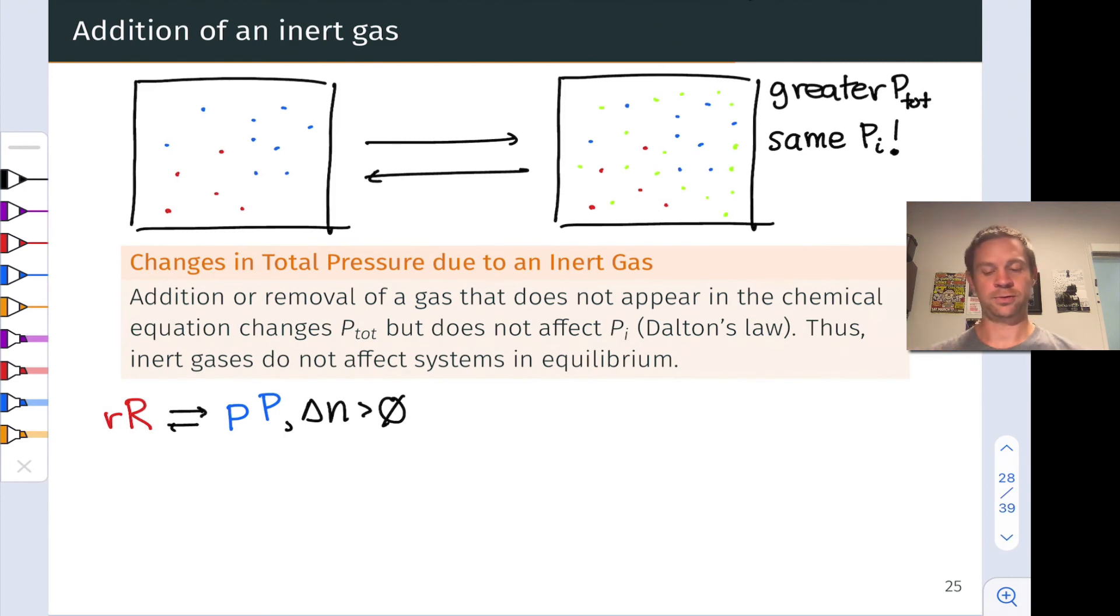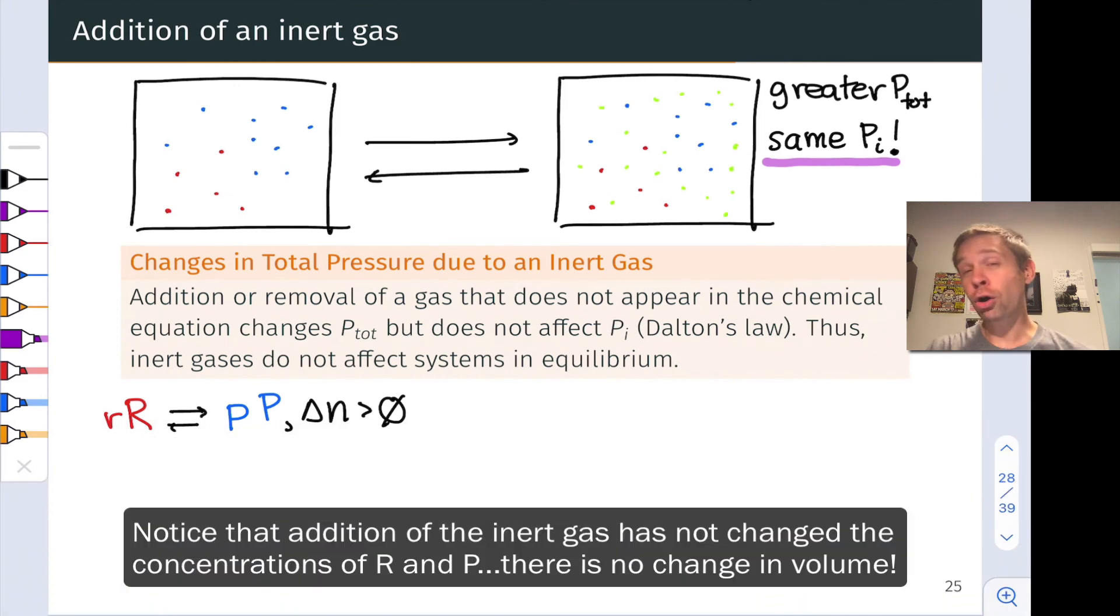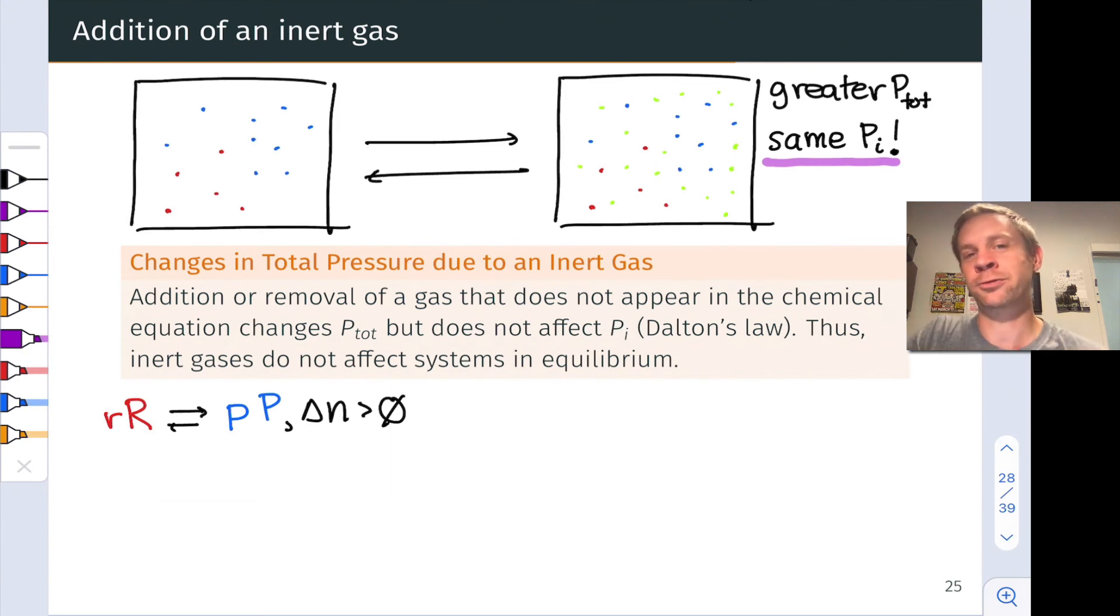The answer is no. The reason is that the partial pressures of r and p are the same. Addition of an inert gas has no effect on the partial pressures of r and p. Think back to Dalton's law. Adding a third ideal gas to a system containing ideal gases r and p is not going to affect the partial pressures of r and p at all.